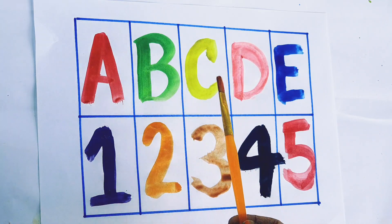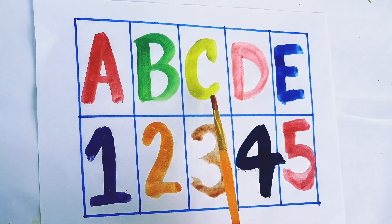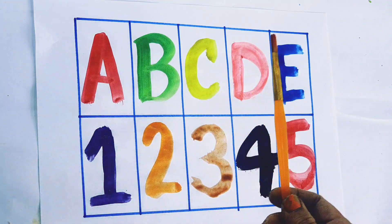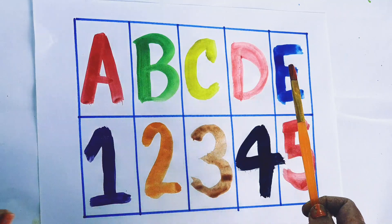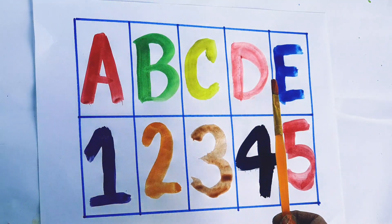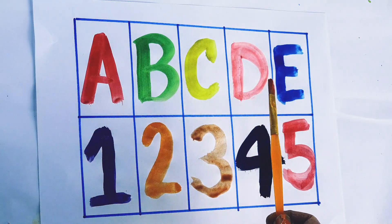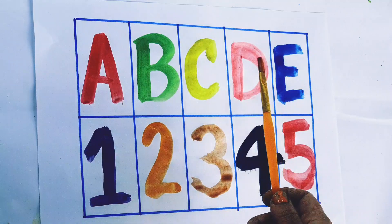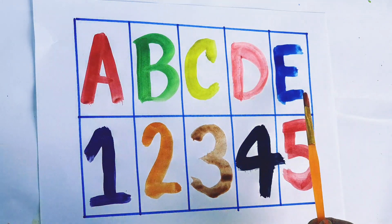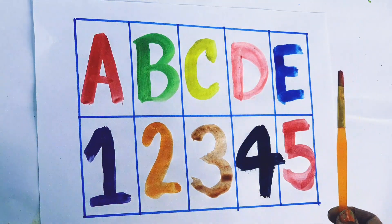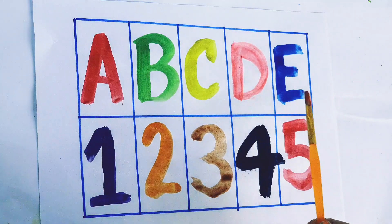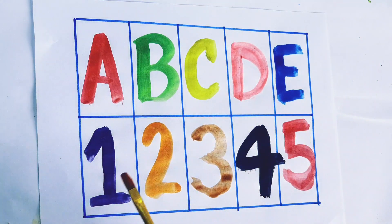C — C for cat, C for cap, C for candy, C for carrot. D — D for dog, D for doll, D for donut, D for dragon fruit. E — E for egg, E for eggplant, E for ear, E for elephant.